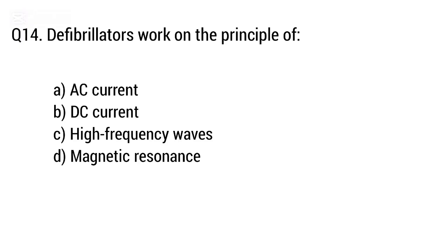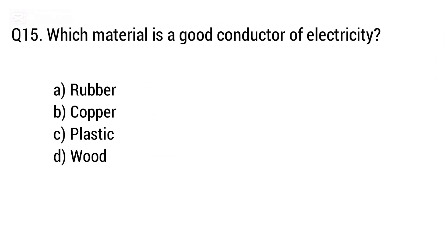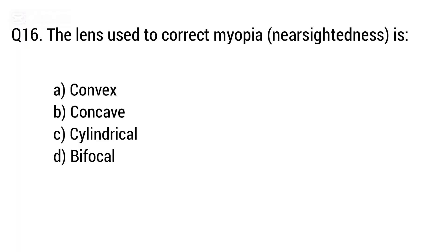Question 14: A defibrillator works on the principle of? The right answer is option B — DC current. Question 15: Which material is a good conductor of electricity? The right answer is option B. Question 16: The lens used to correct myopia (near-sightedness) is? The right answer is option B — Concave.